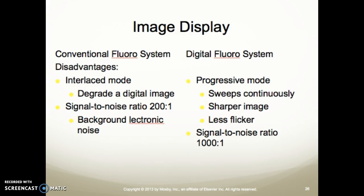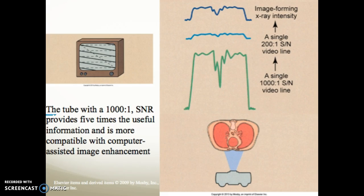Comparing image display: conventional fluoroscopy systems use interlaced modes, which degrade the digital image, and have a signal-to-noise ratio of about 200 to 1, along with background electronic noise. With a digital fluoroscopy system, progressive mode sweeps continuously, providing a sharper image with less flicker and a signal-to-noise ratio of 1000 to 1. The 1000 to 1 SNR provides five times the useful information and is more compatible with computer-assisted image enhancement.